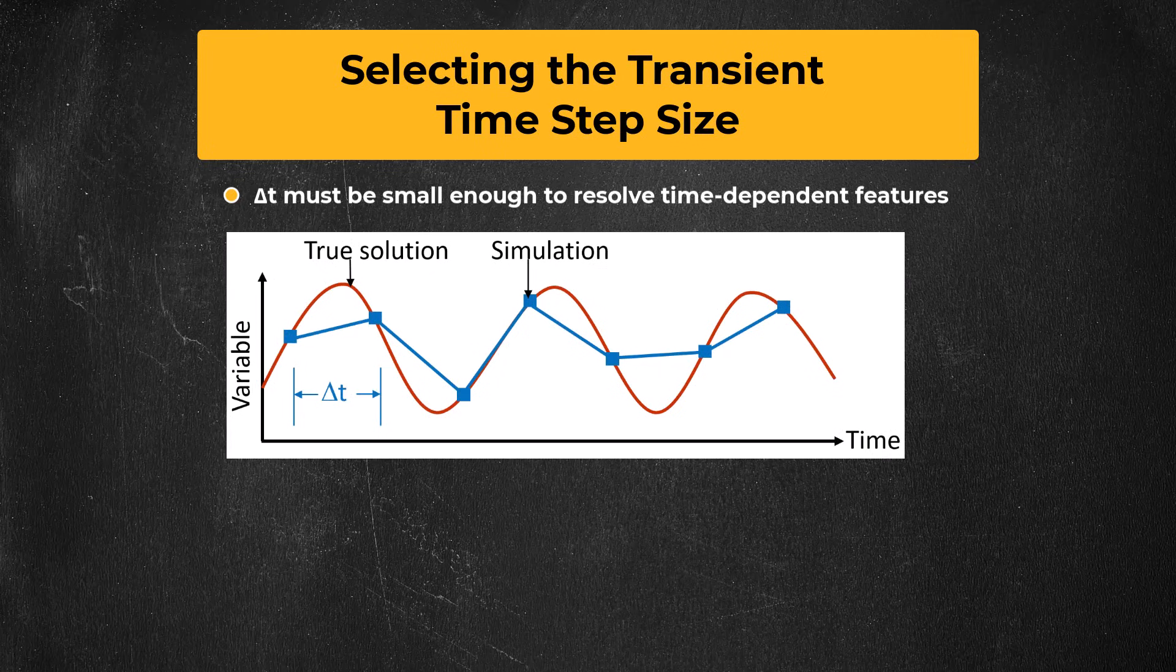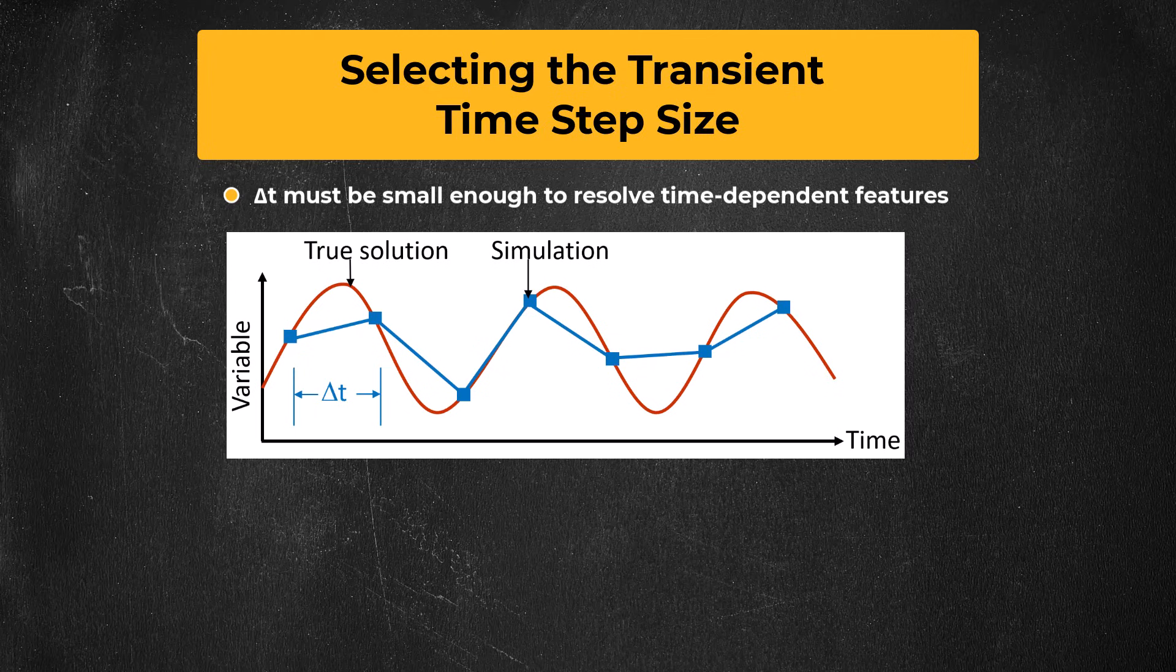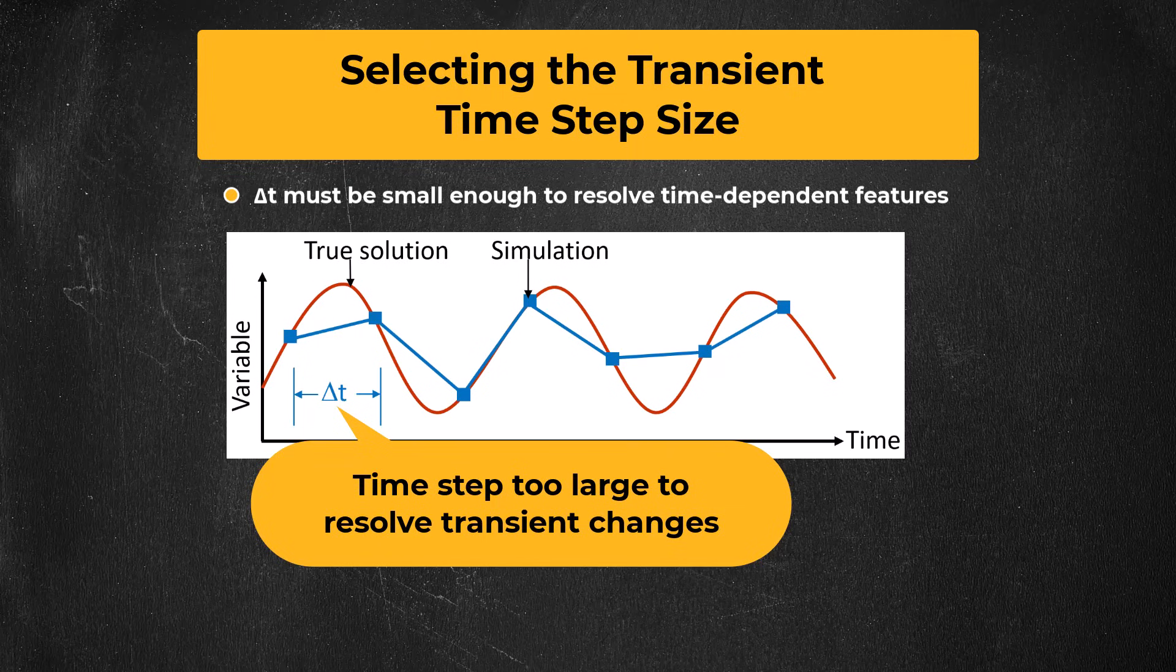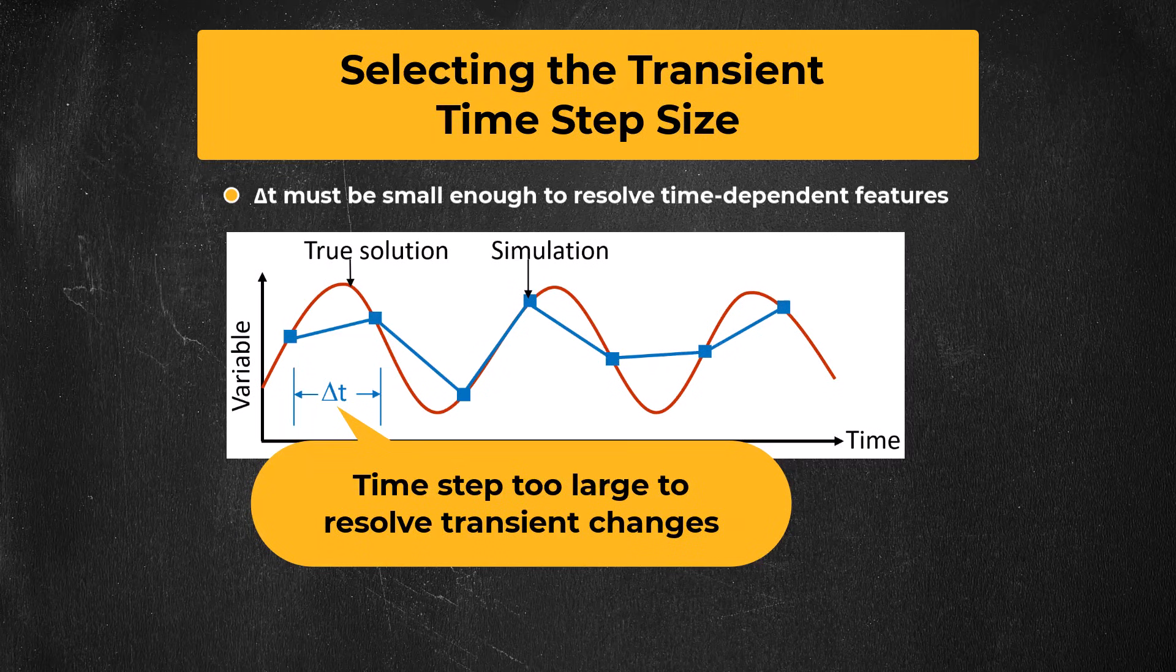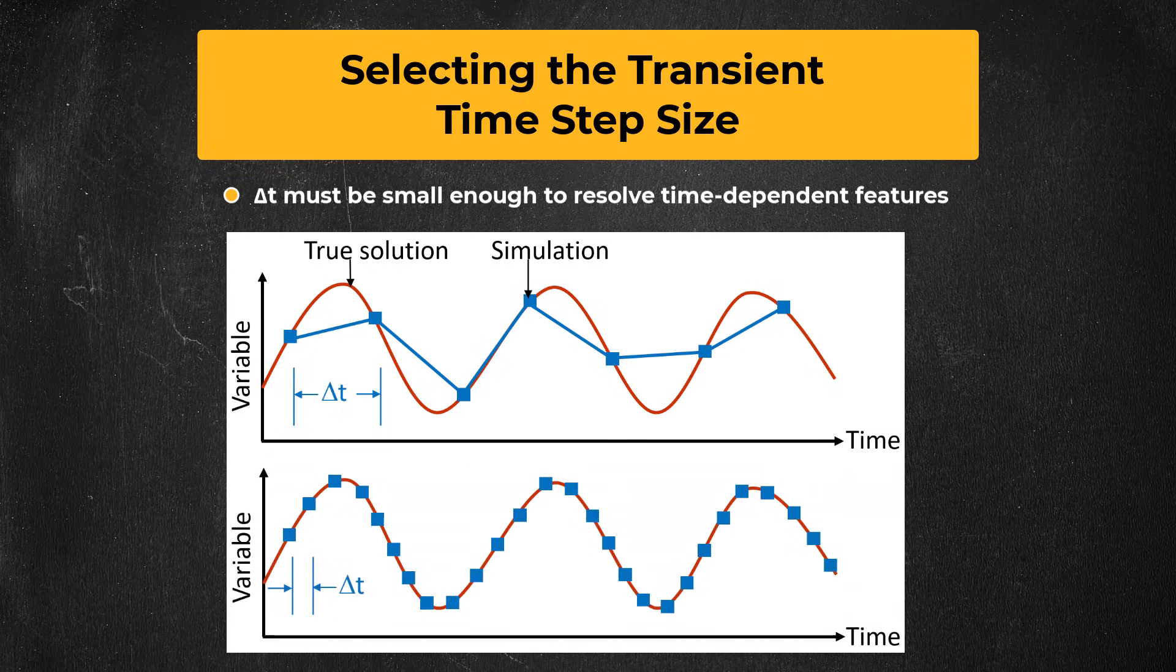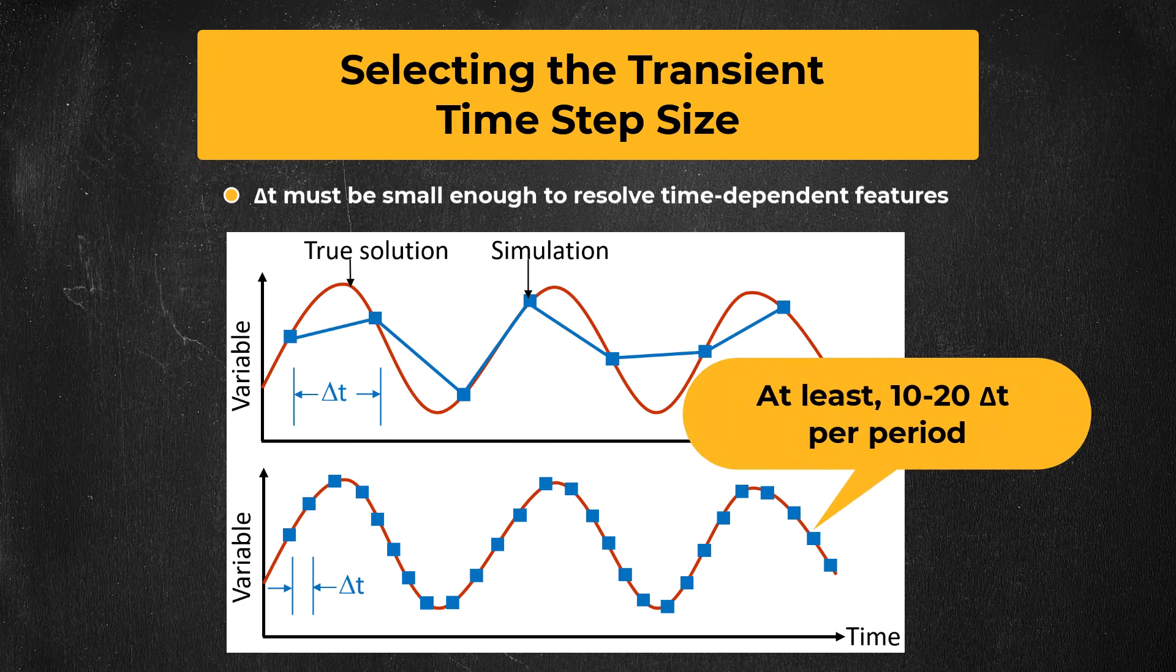Imagine plotting a variable of interest over time, it could be velocity, pressure, temperature, whatever makes sense for a given problem, and then imagine the true solution of that variable is shown here by the red curve. As the plot shows, if the time step size is too large, the numerical solution, which is shown in blue, will not accurately resolve the transient behavior, and the situation would probably even be worse than what you see here, because the CFD solution points would usually not even match the true solution. On the other hand, the lower plot shows that if the time step is small enough, the true unsteadiness can be accurately resolved by the CFD solution. For problems like this one that have periodic unsteadiness, you probably need to have 10 to 20 time steps per period in order to achieve good resolution.